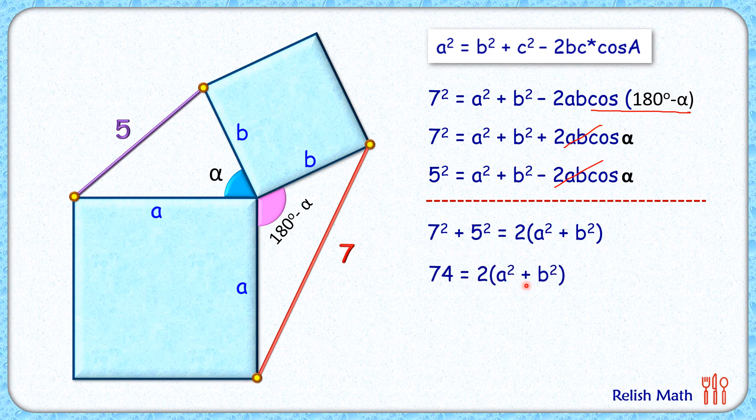Now simplifying it, we'll get 74 = 2(a² + b²), or a² + b² = 37. And a² is the area of this blue square, and b² is the area of this blue square, so the total area of these two squares is 37 square centimeters, and that's our answer.